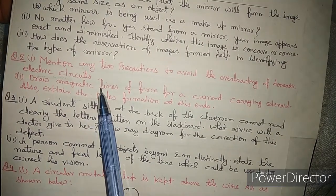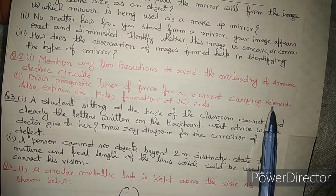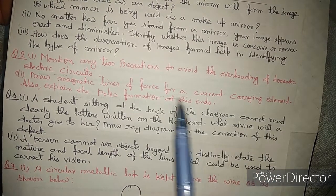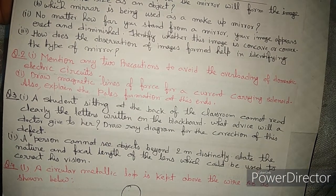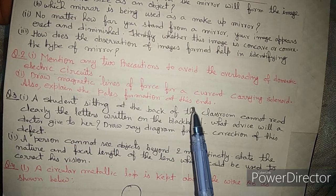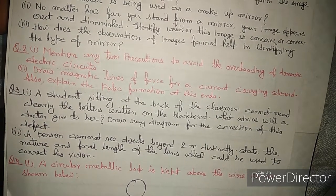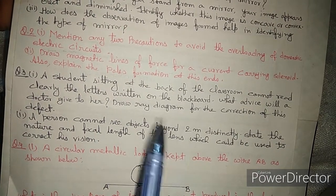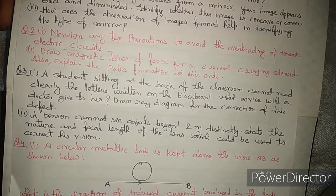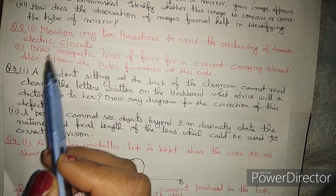Also in question two, you need to draw the magnetic lines of force for a current-carrying solenoid. This is a very important topic from the magnetic effect of current chapter and a question on it always appears. You must also explain the pole formation at its ends — the south and north poles — and describe how the magnetic field lines form at each pole of the solenoid.